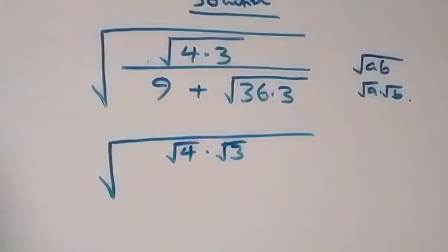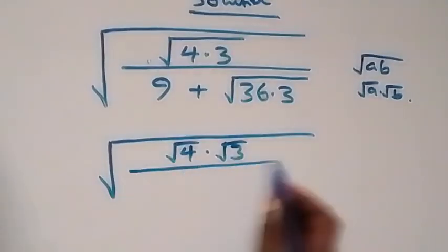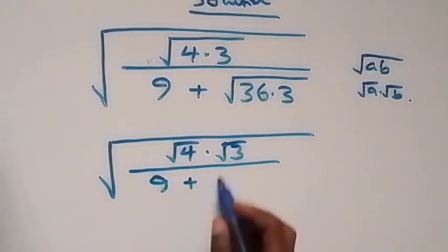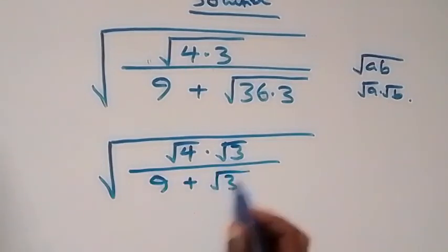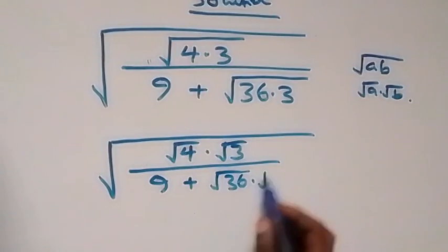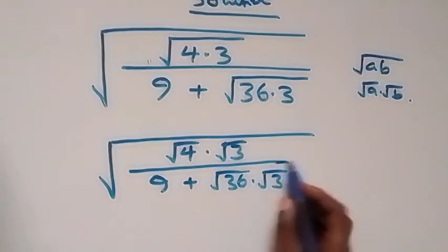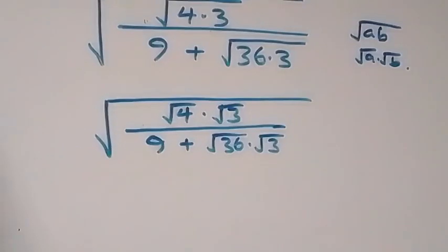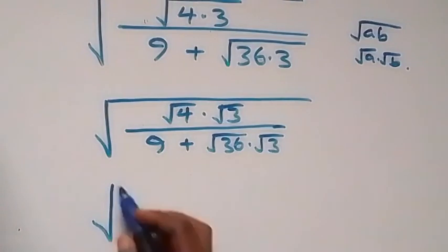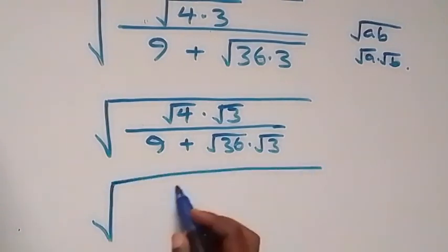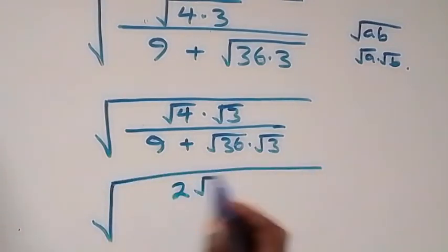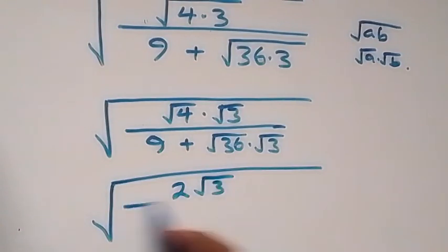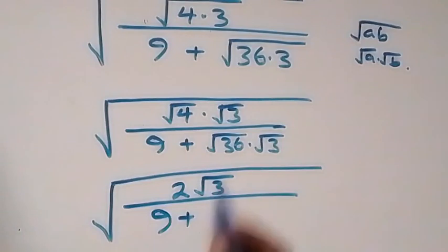Divided by 9 plus √36 times √3. Our next step: √4 is 2, so this becomes square root of 2√3 divided by 9 plus — and √36 is 6 — so we have 6√3 there.